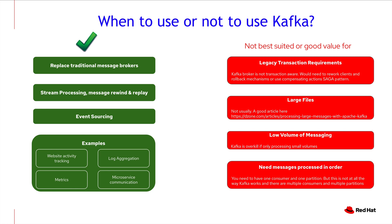Good examples for Kafka include website activity tracking, log aggregation, metrics, web-scale microservice communication. For event sourcing — do you need a database, or can you maintain state in memory and rely on your Kafka topic to maintain all those changes and rebuild state whenever needed? If you need messages processed in order, with Kafka you need to use one consumer and one partition, which is not the typical way Kafka works, but it can be managed.